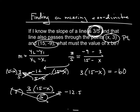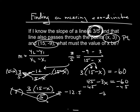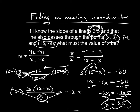Now solve using the distributive property: 3 times 15 is 45, 3 times (-x) is -3x, so 45 - 3x = -60. Subtract 45 from both sides: -3x = -105. Divide both sides by -3 and you get x = 35. So that's method 2 — using the slope formula. It's common because teachers use it as a refresher for solving equations.